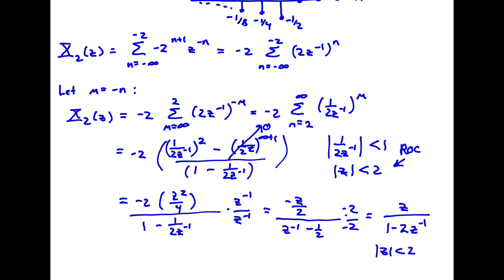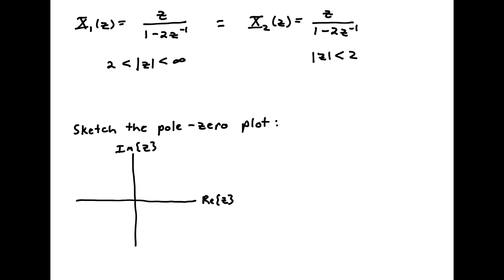So I have the same exact algebraic expression for both x1(z) and x2(z), but different regions of convergence: |z| greater than 2 for x1 and |z| less than 2 for x2. The only difference is the ROC, and that relates to where the poles and zeros are, so let's think more carefully about that.